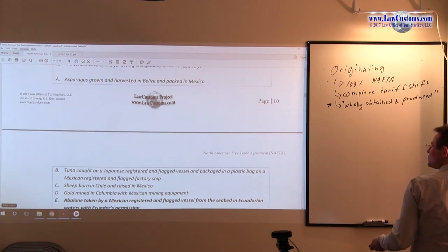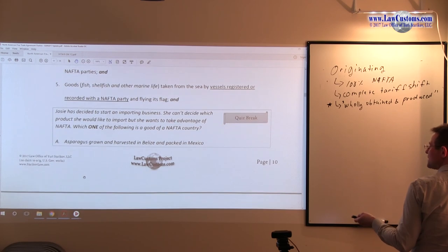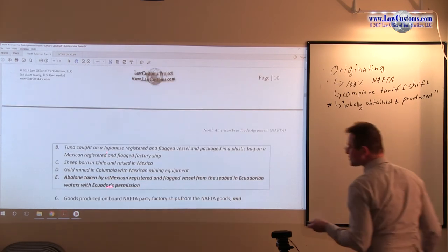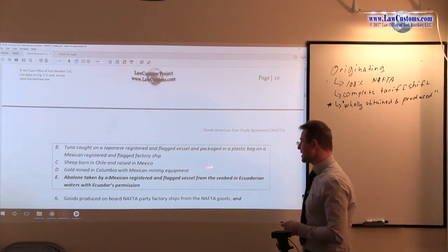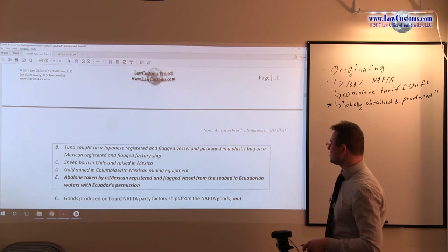So because it is registered in Mexico, it is good enough. And we know that because we have that rule for the goods, the shellfish in this case, or marine life, which is abalone, taken from the seabed by vessels registered and recorded in a NAFTA party and flying its flag. In this case, Mexico, which is a member state. It was taken from the seabed in Ecuadorian waters with Ecuador's permission.